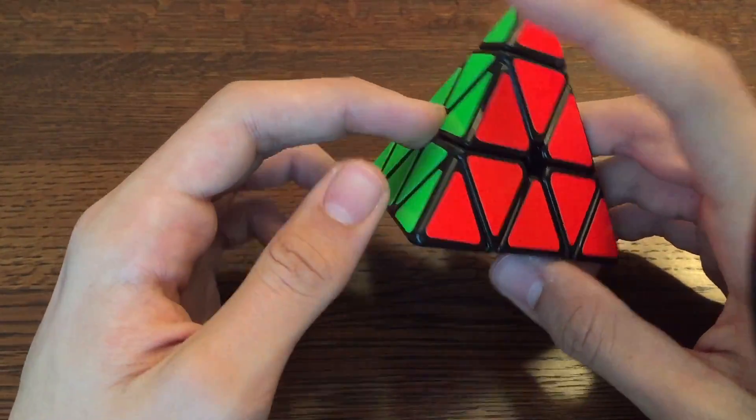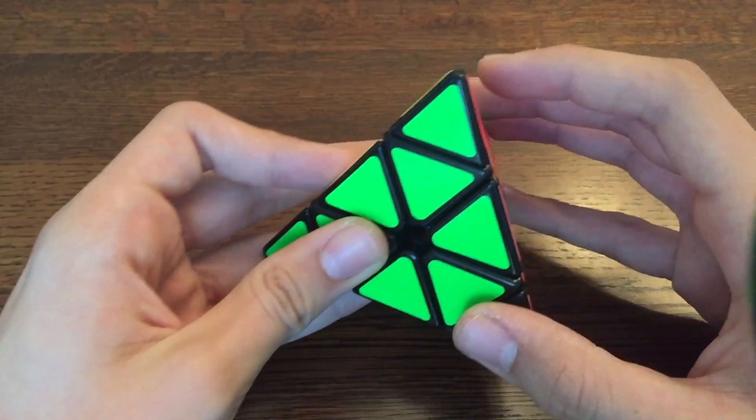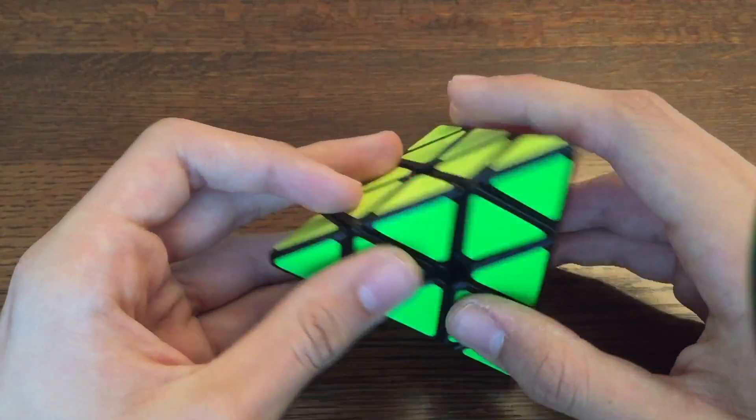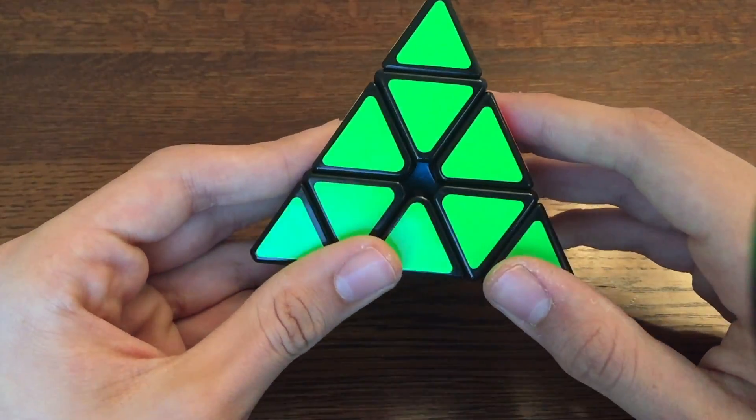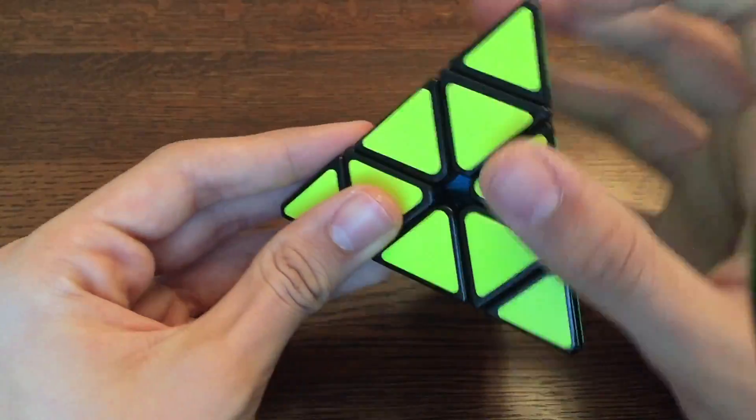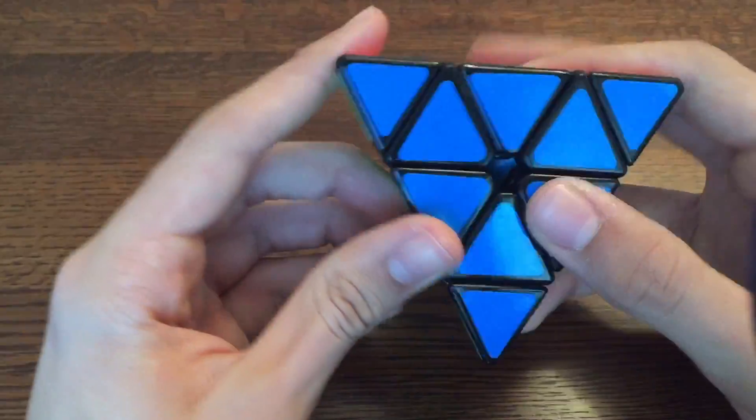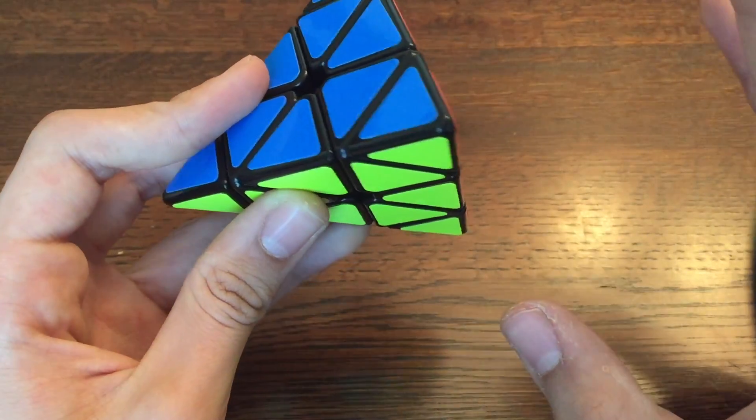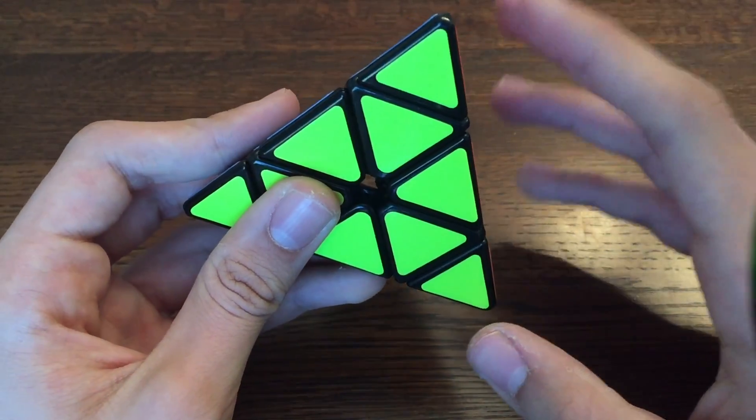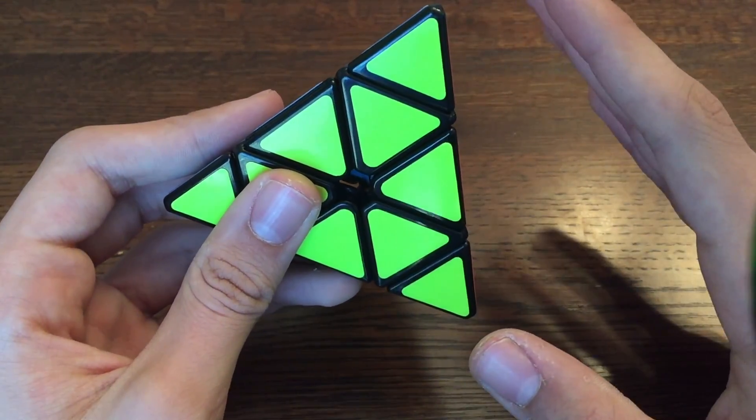At first glance this may look like a hard puzzle, but once you get to know it a little better it is actually very easy. On the pyramid are four colors: green, yellow, red, and blue, and none of the colors are opposite from each other so you don't have to worry about any of that kind of stuff.